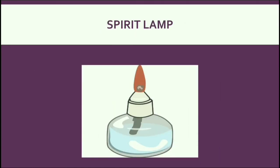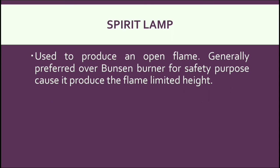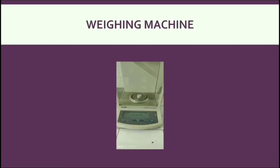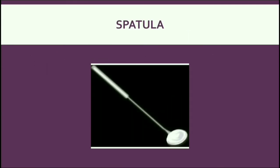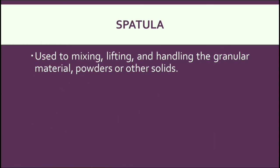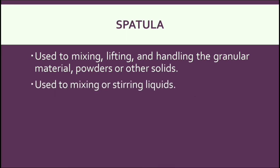Now, Spirit Lamp or Alcohol Burner. This is a piece of lab equipment used to produce an open flame. It is generally preferred over the Bunsen burner because it is safer, producing a flame at a limited height. Next, Weighing Machine. A weighing machine is a lab tool used to measure the weight or mass of an object. This is a Spatula — a small spoon-like tool made of stainless steel, generally used for mixing, lifting, and handling granular materials, powders, or other solids, and also for mixing and stirring liquids.